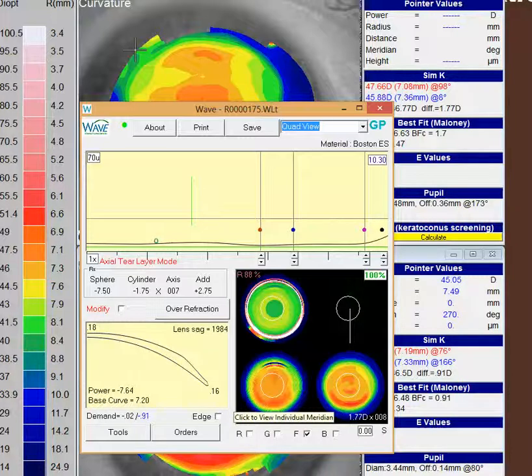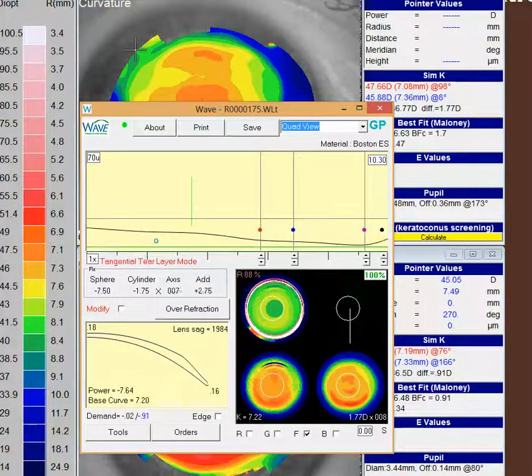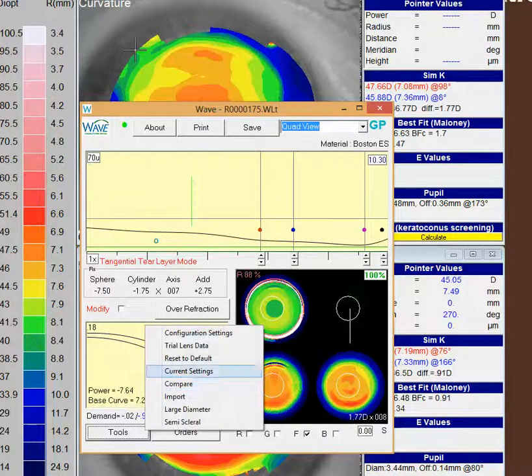Now what I might be inclined to do is actually just keep it in free form, click over here from axial over to tangential design. Tangential design tends to flatten up this periphery a little bit. It's probably about a half-diopter flatter and so if we do that.